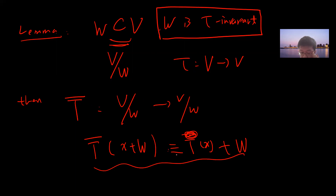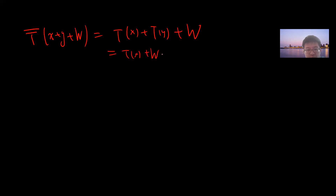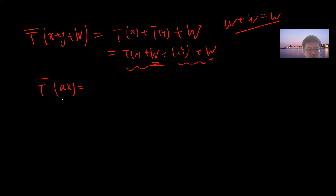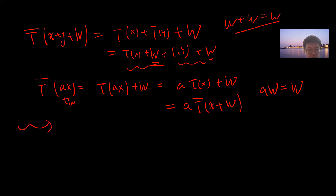We need to verify T-bar is actually a linear transformation. If you take x + y in W, you get T(x) + T(y) plus W, which equals (T(x) + W) + (T(y) + W), since W + W = W. Also, T-bar(ax + W) equals T(ax) + W equals a·T(x) + W, since a·W = W as W is a subspace. So T-bar is linear.